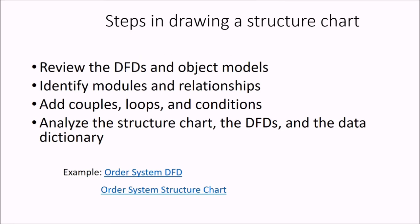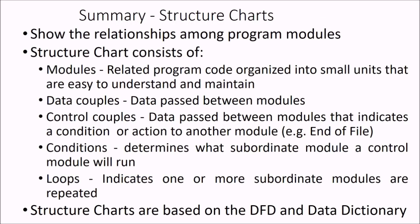The steps in drawing a structure chart are: first, review the data flow diagram and object models; then identify the modules and relationships between them; add the couples, loops, and conditions; and finally analyze the structure chart with DFDs and the data dictionary. In summary, structure charts show relationships among program modules, consisting of modules, data couples, control couples, conditions, and loops. Modules are related program code organized into small manageable units. Data couples are data passed between modules; control couples indicate a condition or action to another module; conditions determine which subordinate module a control module will run; and loops indicate repeated subordinate modules. Structure charts are based on DFDs and data distribution.